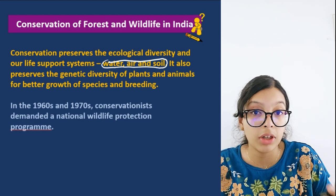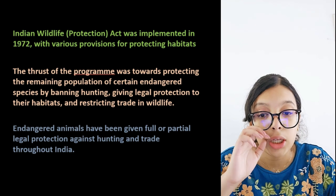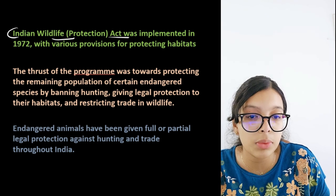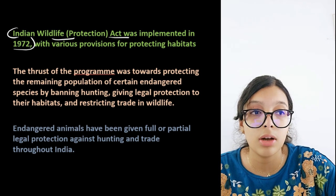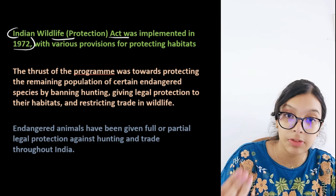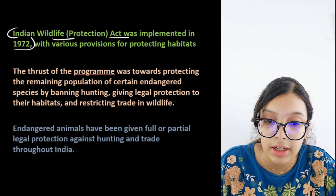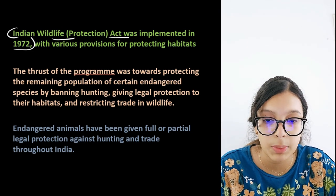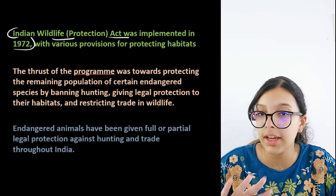The Indian Wildlife Protection Act was implemented in 1972, with various provisions for protecting habitats. The main idea of the program was to protect the remaining population of certain endangered species by banning hunting, giving legal protection to their habitats, and restricting trade in wildlife. These are the three core points of this act.